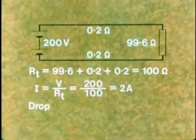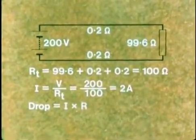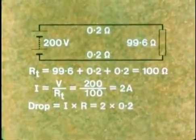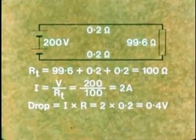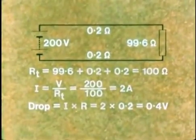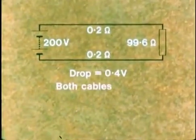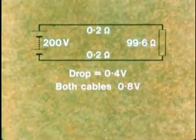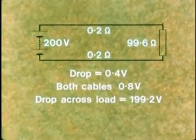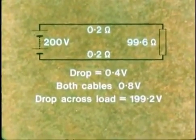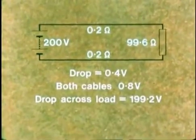The voltage drop in each cable is given by I times R. That is 2 times 0.2, 0.4 volts. So the total voltage drop in both cables together is 0.8 volts, which makes the drop across the load 199.2 volts. So we can deal with the resistance of the cables if we need to.